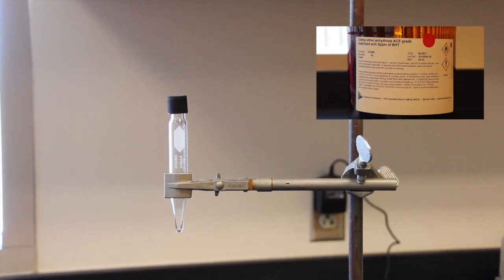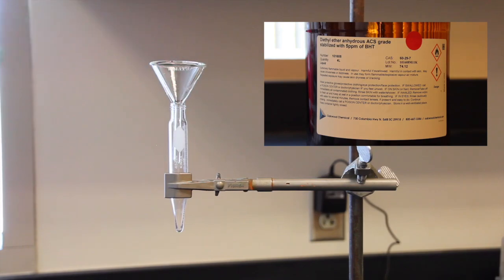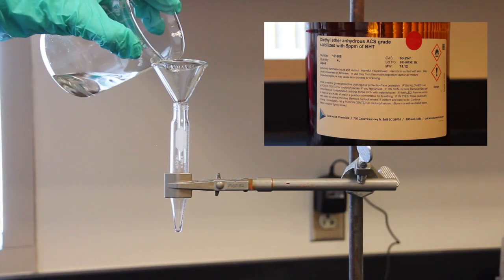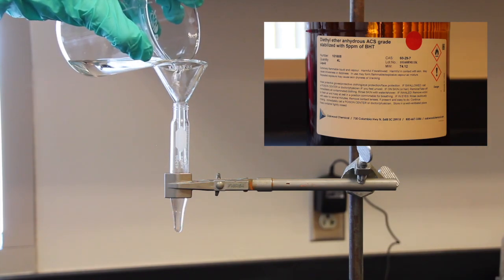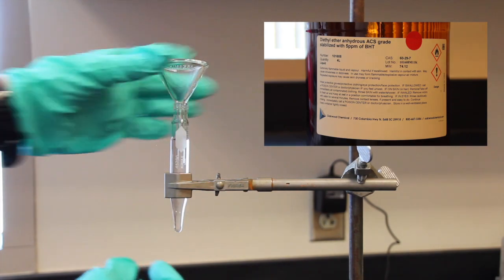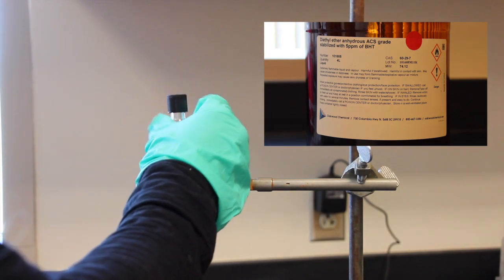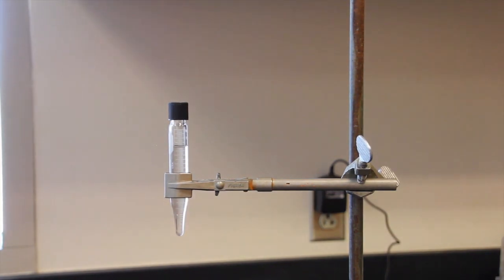Next, pour your anhydrous diethyl ether into an oven-dried 12 milliliter screw cap centrifuge tube until the tube is about halfway full and immediately cap the tube. You will be using this tube to store your dry ether during the course of this experiment. During the experiment, remove the ether from the tube with an oven-dried Pasteur pipette. When not in use, you should immediately cap the tube. It is important to minimize your exposure of the solvent to moisture in the air. In addition, solvent grade ether should not be used because it contains water.